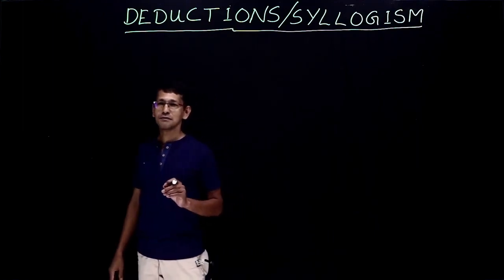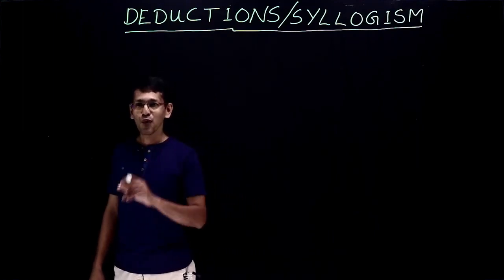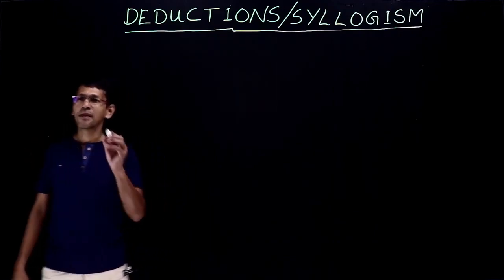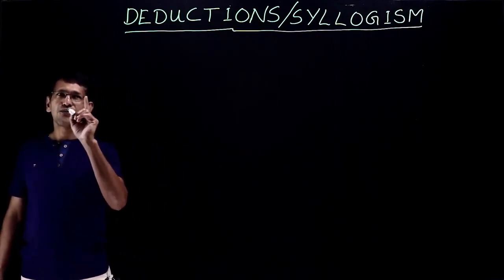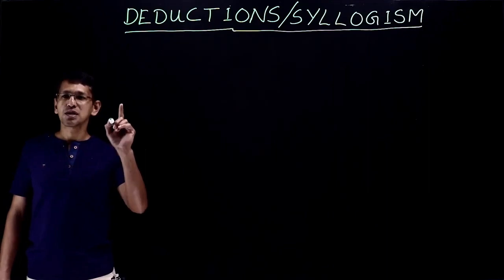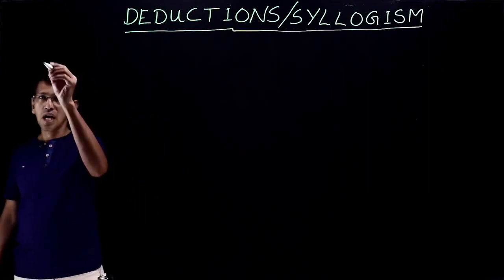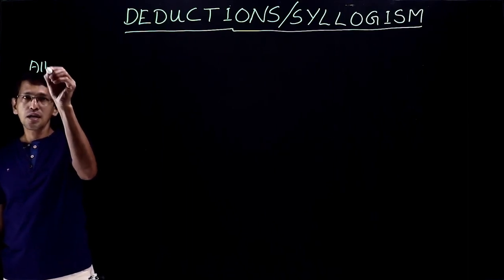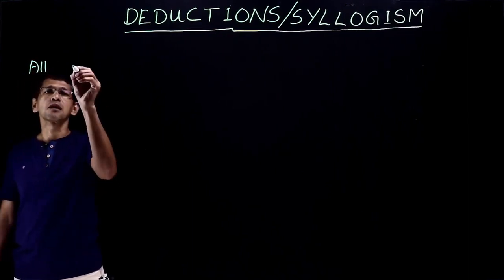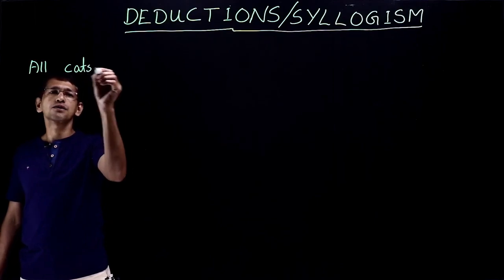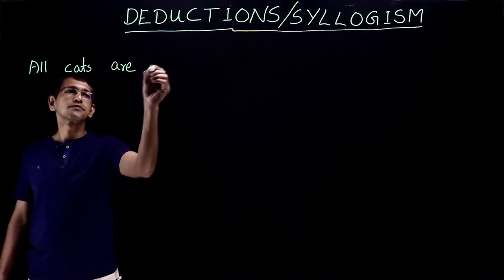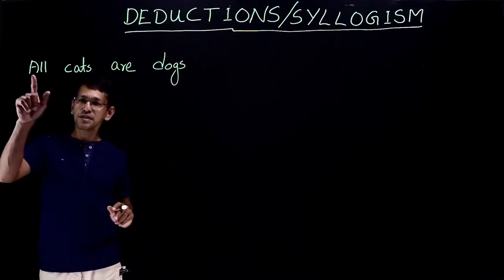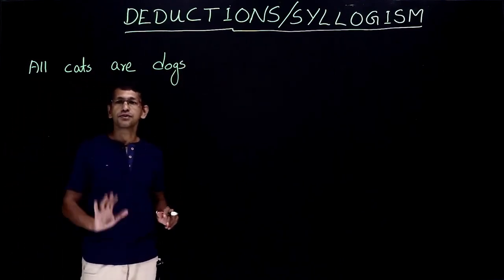You need to understand the four types of statements which come under deductions. The first type of statement starts with "all" — all something is something. For example, all cats are dogs. It's a simple example of the first type of statement.